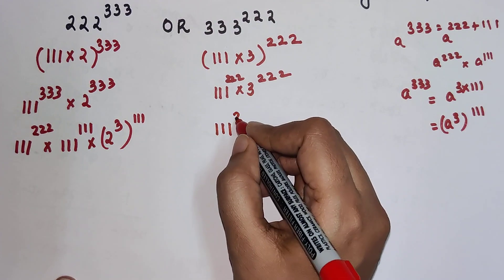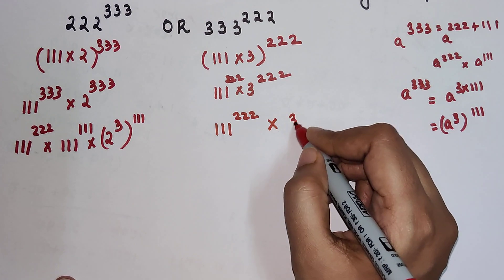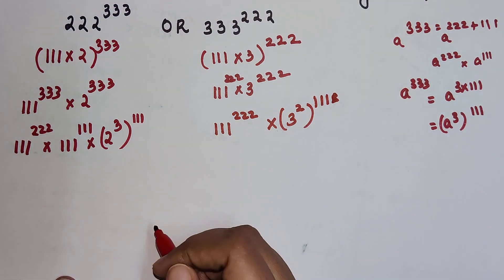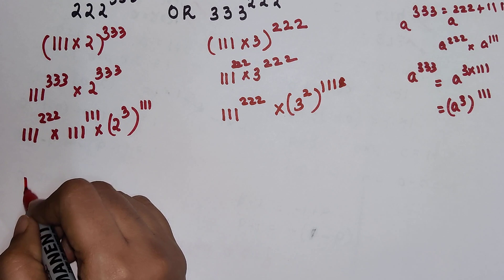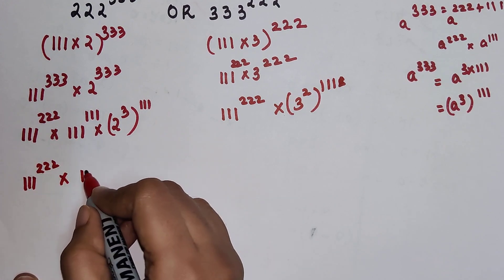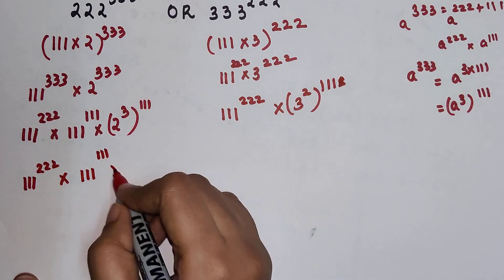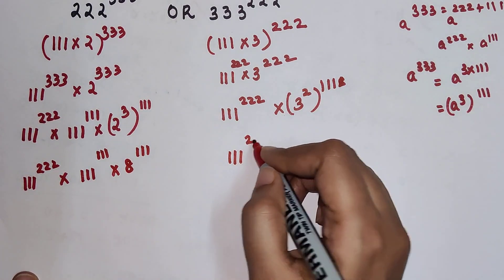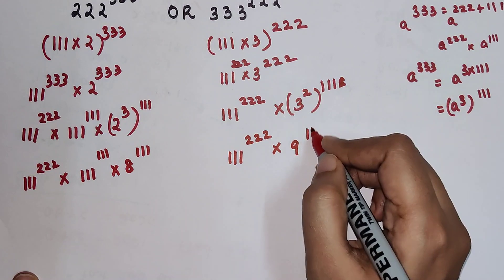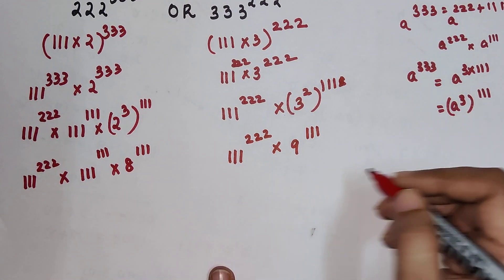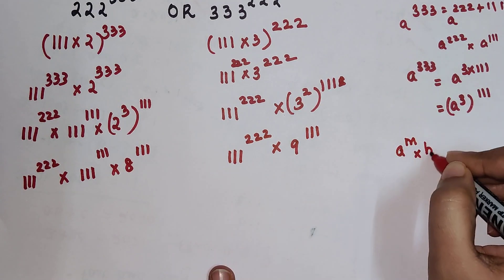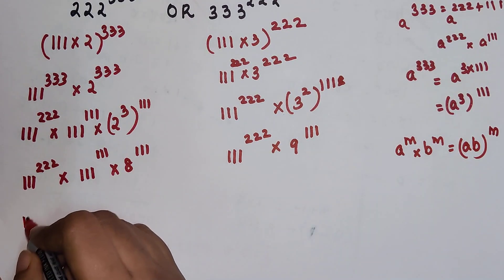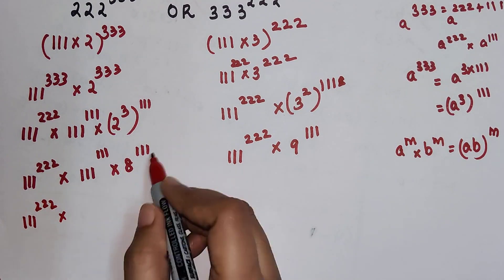So now the first expression becomes 111 raised to 222 into 8 raised to 111, into 111 raised to 111. We know that a raised to m into b raised to m can be written as (a into b) the whole raised to m. Using that logic, since both 8 raised to 111 and 111 raised to 111 share the same index, they can be multiplied together.